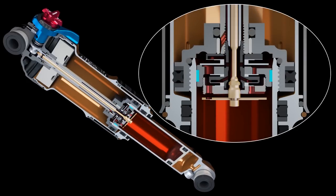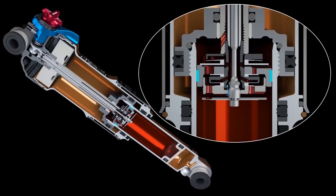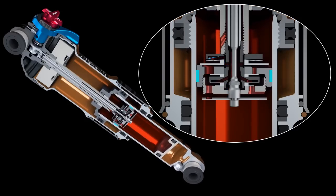When the shock is switched to medium mode, the low-speed compression damping circuit is restricted to provide a firmer, more efficient ride.